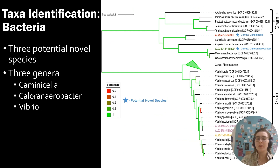Looking at our bacteria, we also found three potential novel species across three genera: Cheminicella, Chlorinobacter, and Vibrio.